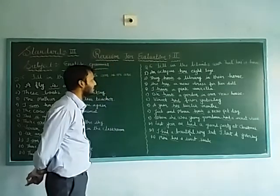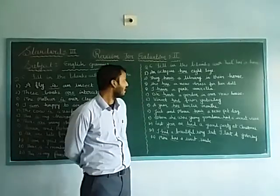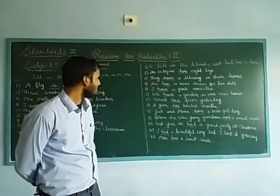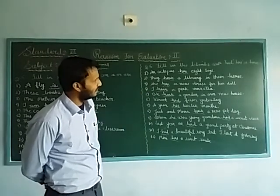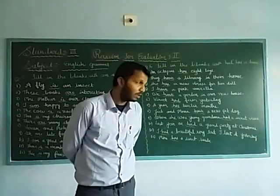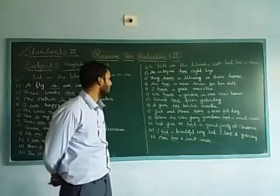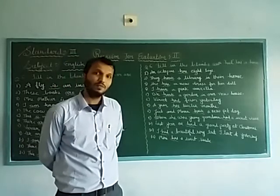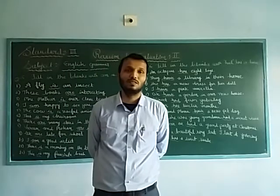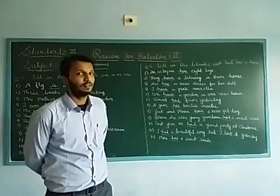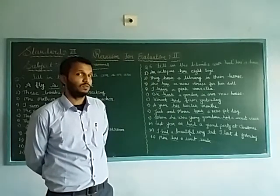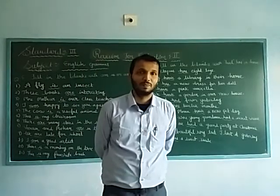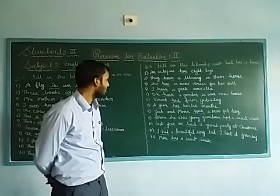Fourth number: I blank a pink umbrella — the answer is 'have', I have a pink umbrella. Fifth number: we blank a garden in our new house — the answer is 'have', we have a garden in our new house. Sixth number: we blank fever yesterday — the answer is 'had'. Yesterday shows us this was past tense. Whenever we use 'had', that is past tense — 'had' is used for past tense.